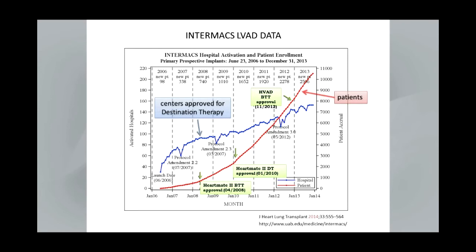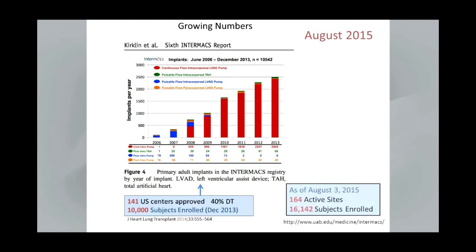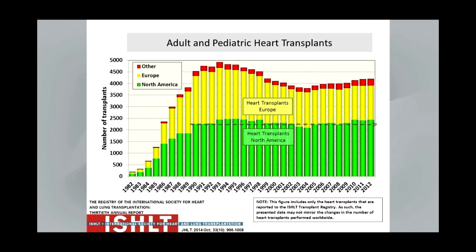This is INTERMACS data which shows a remarkable increase in the number of both implant centers and the cumulative number of patients since 2006. You can see when the HeartMate II was approved for destination therapy in January 2010. The INTERMACS 6th Annual Report indicated more than 2,000 continuous flow pumps had been performed annually during 2012 and 2013, and a recent query of the database indicates that current active implant sites expanded, and the total number of implants as of August 3rd, 2015 was 16,000. At this time, the number of LVAD implants annually exceeded the number of heart transplant patients.